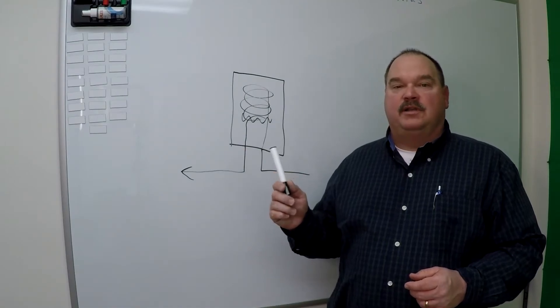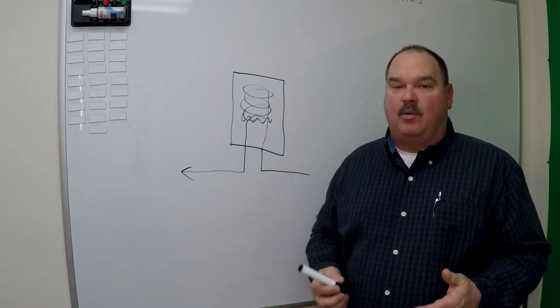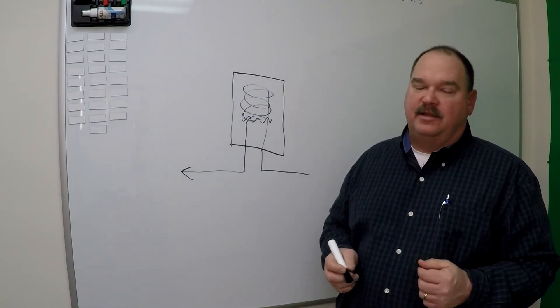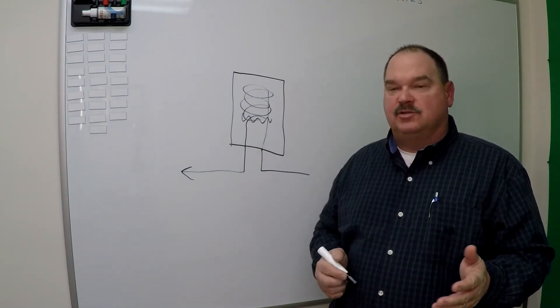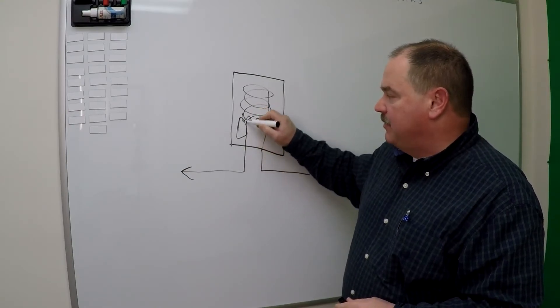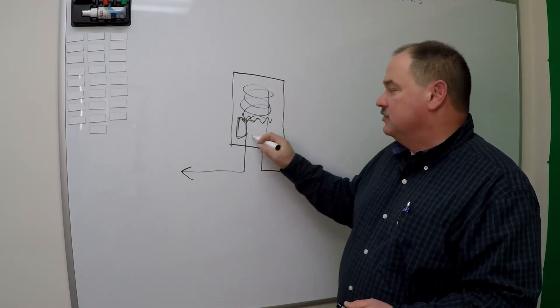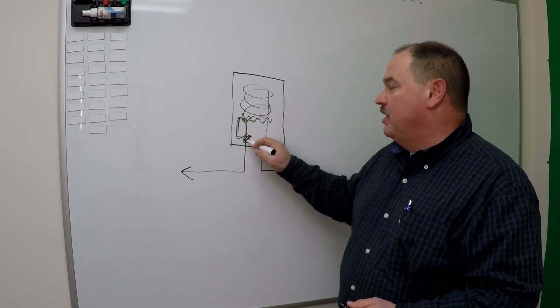Most tankless water heaters have a minimum flow rate required to get them to fire up and make hot water. Usually, that's around a half a gallon a minute. With the Navien tankless water heater, there's actually an internal buffer tank available for the A models. It's about the size of a thermos. It holds one liter of hot water.